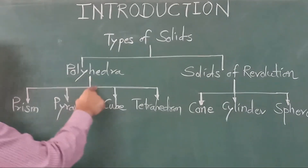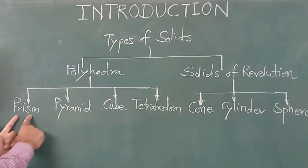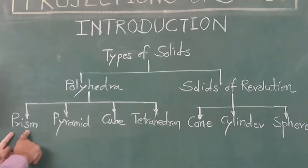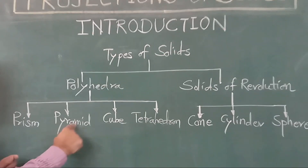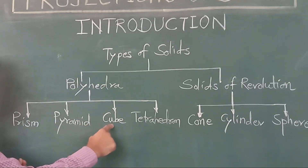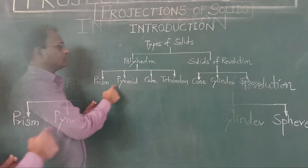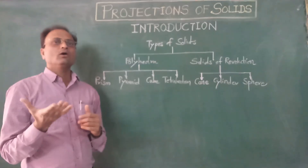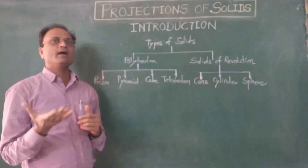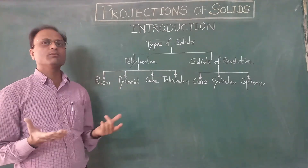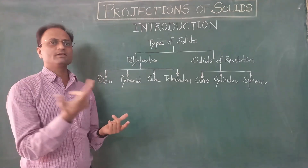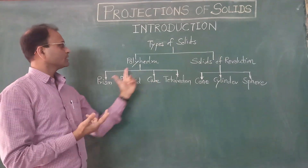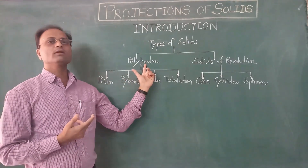Under polyhedra, there are various types of solids such as prisms, pyramids, cubes, and tetrahedra. All these solids have a top face and base in the shape of a regular polygon, and they have bounding surfaces. All these solids come under the category of polyhedron.